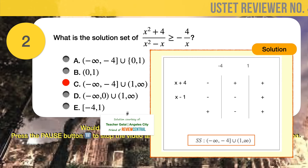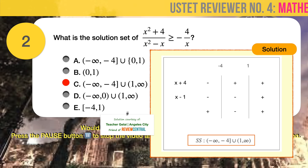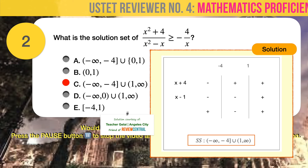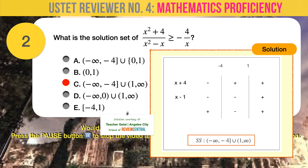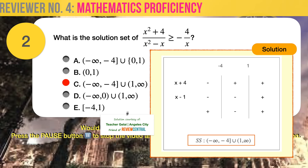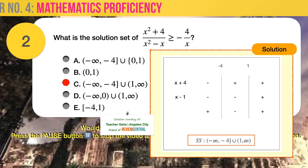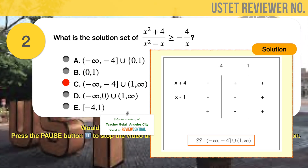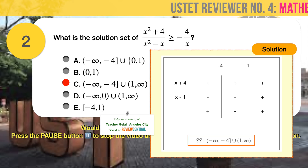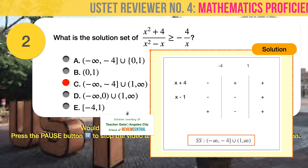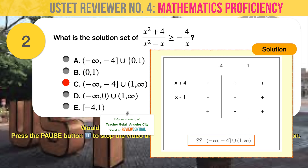Now, recall from your algebra how to express inequalities using interval notations. Parentheses represent solutions strictly greater or less than the number, while brackets represent solutions that are greater than or equal to, or less than or equal to, the number. Use parentheses to represent infinity or negative infinity, since they are not numbers and therefore cannot be equal. Our final answer is the solution set in option C.